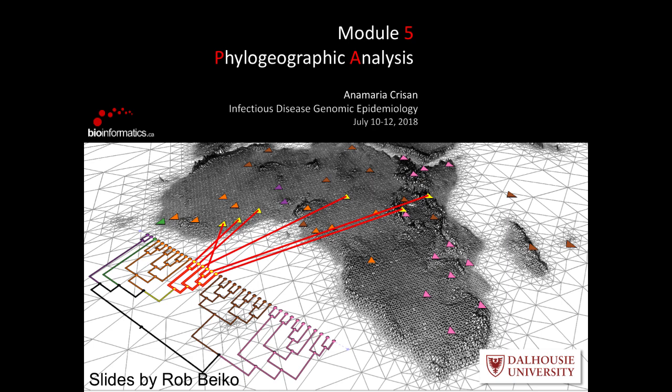The idea behind phylogeographic analysis is essentially that you are taking time, geography, and trees and putting them together in some way. As we will see, this can be done in a couple of different ways, depending on how you're creating your trees and what kinds of methods you are using.